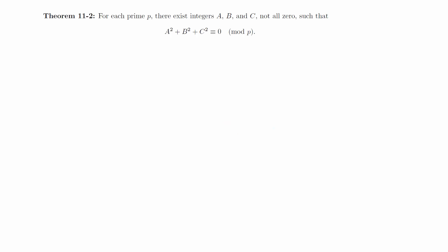Theorem. For each prime p, there exist integers a, b, and c, not all zero, such that a squared plus b squared plus c squared is congruent to zero modulo p. If p equals two, we can take a and b equal to one and c equal to zero. If p is congruent to one mod four, we know that there exists an integer a such that a squared is congruent to negative one modulo p.